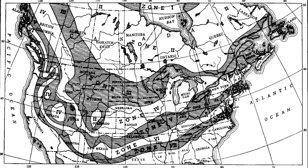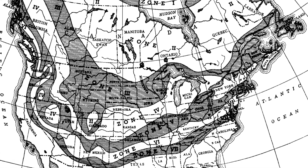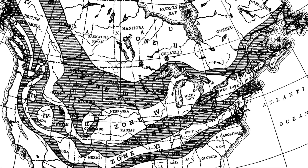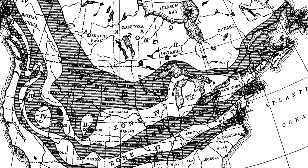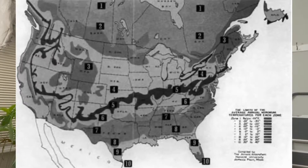The second map was created 11 years later in 1938 by Dr. Donald Wyman, also of the Arnold Arboretum. His map was published in his own book called Hedges, Screens, and Wind Breaks. This map used weather data collected from the U.S. Weather Bureau from 1895 to 1935. He then updated his map three times in 1951, 1967, and 1971.